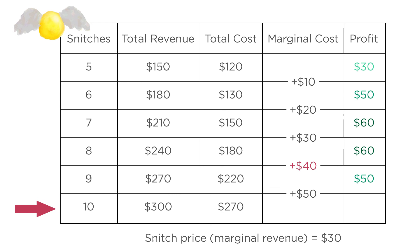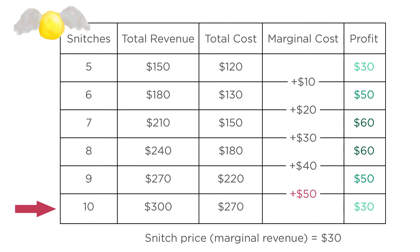As production grows to ten or more snitches, marginal costs continue to rise and the problem only gets worse. At these production levels, the firm will be heading back down the hill — marginal cost is greater than marginal benefit, and the firm should produce less. As with all the optimizing we've been doing in this course, profits will be maximized only when marginal cost equals marginal benefit. If marginal cost is bigger or smaller than marginal benefit, the firm will be able to adjust its quantity produced to get a higher profit.